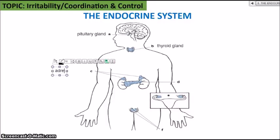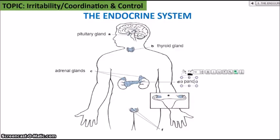C is pointing at the adrenal glands, which secrete adrenaline — the fight, flight, or fright hormone — which increases heart rate and breathing rate when you're engaged in any thrilling activity. D is the pancreas, which has two functions: the digestive function we've covered previously, and the endocrine function of producing the two hormones insulin and glucagon for regulating blood glucose levels.